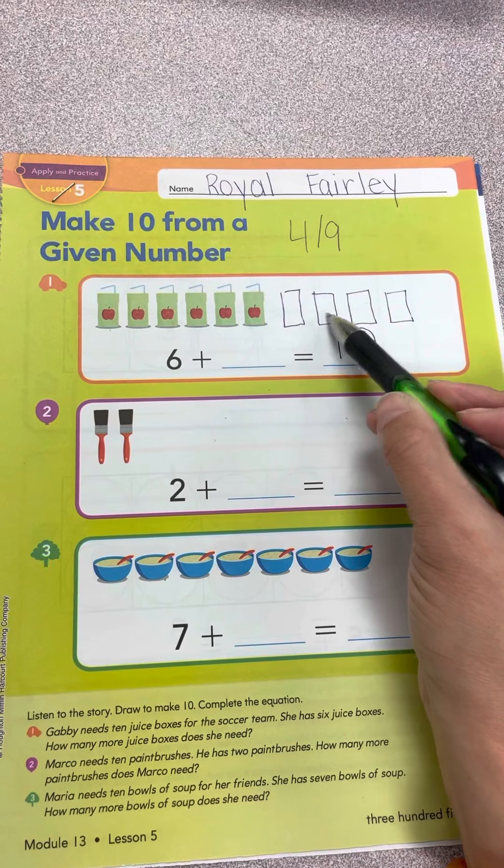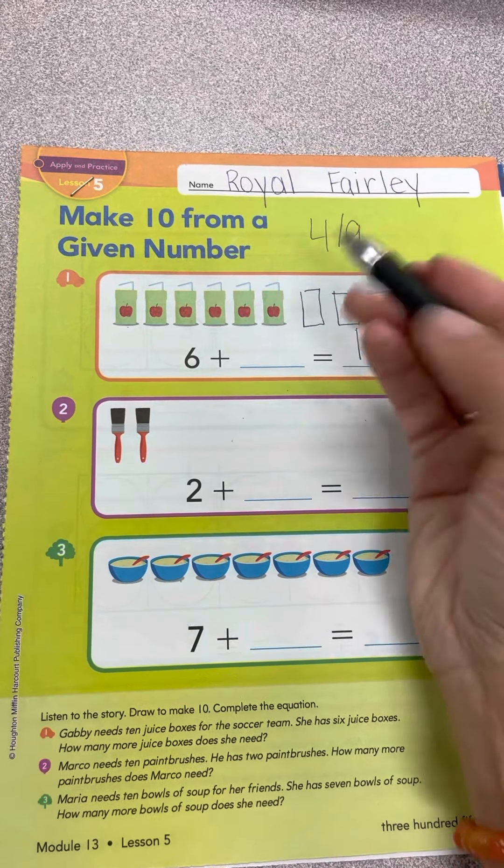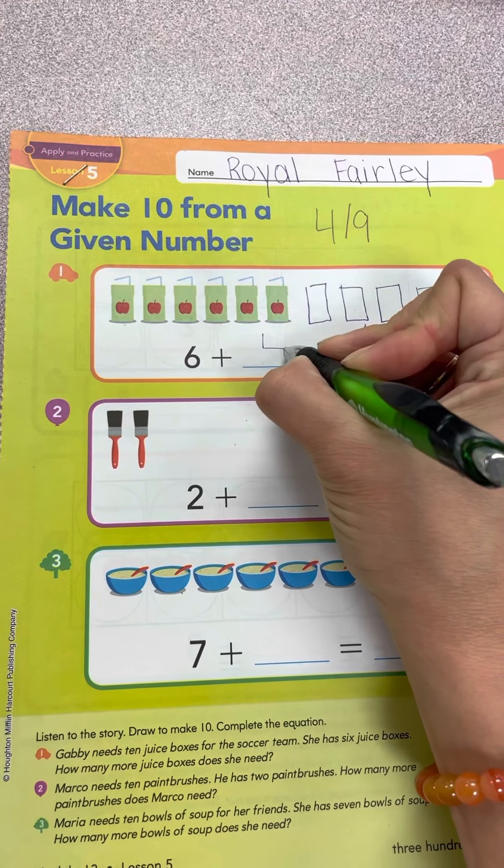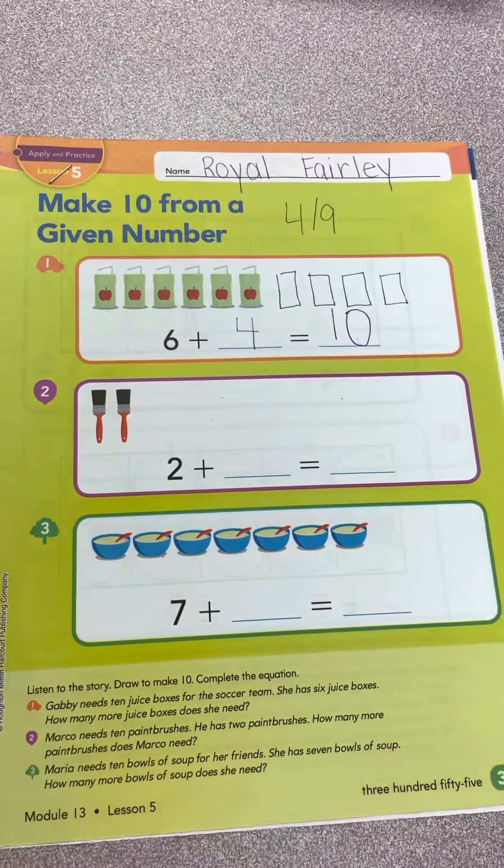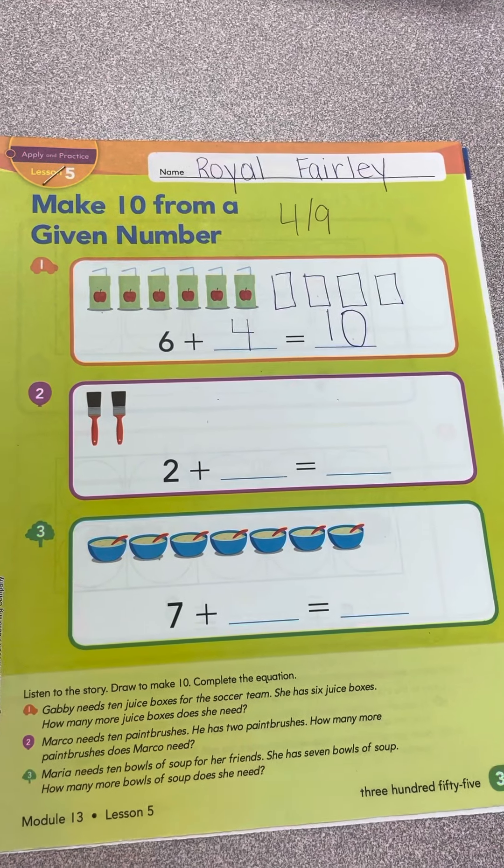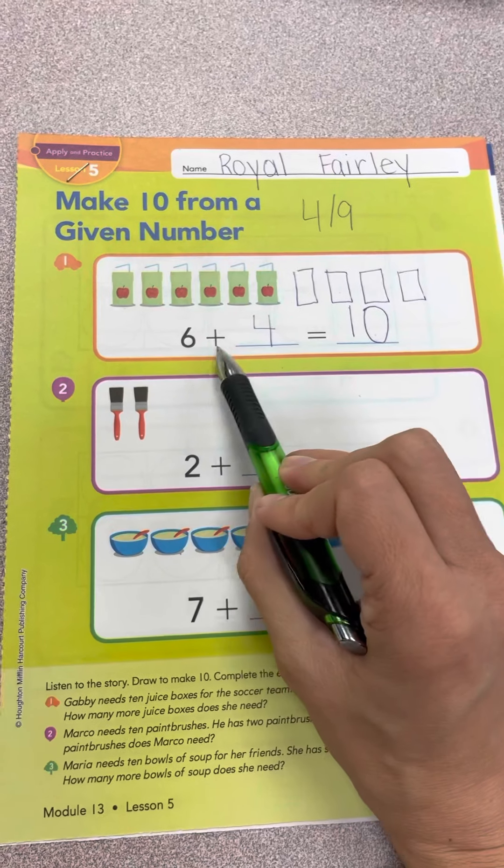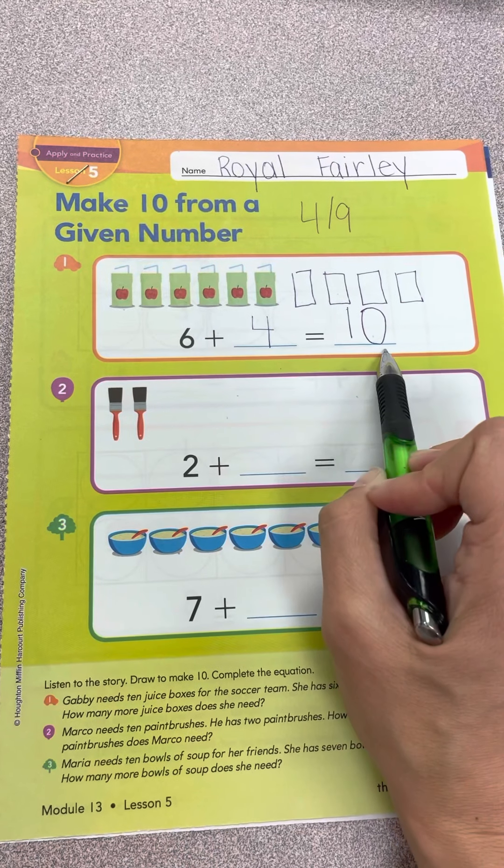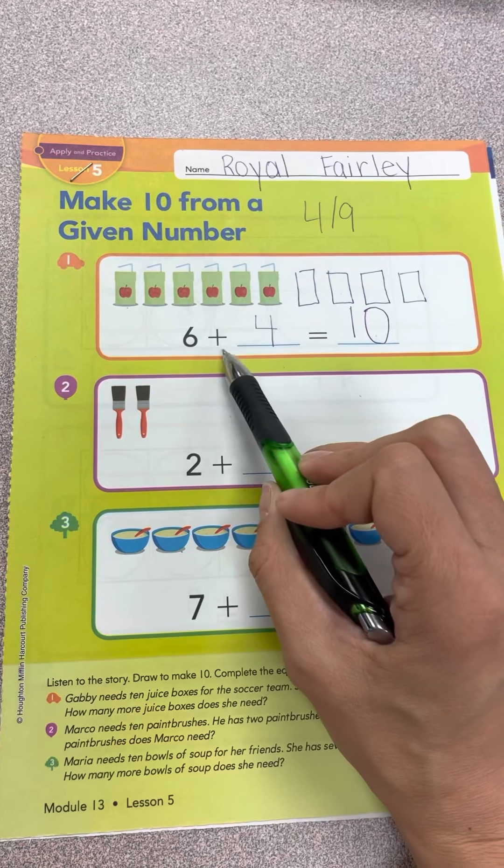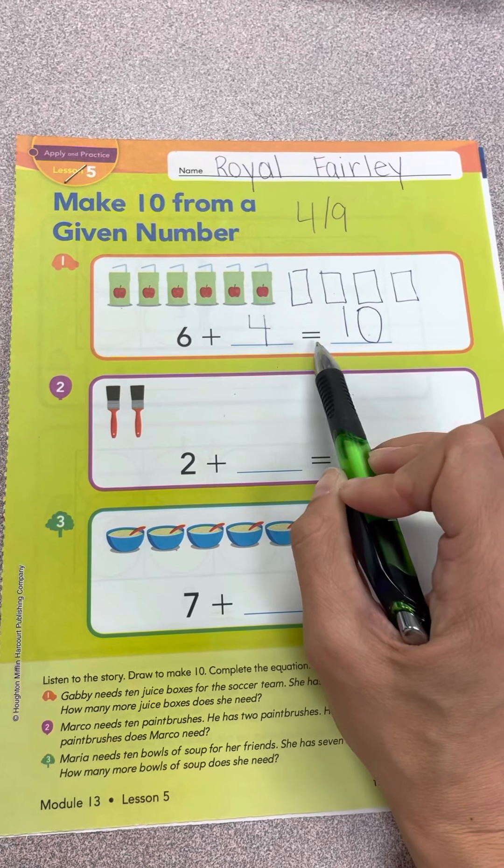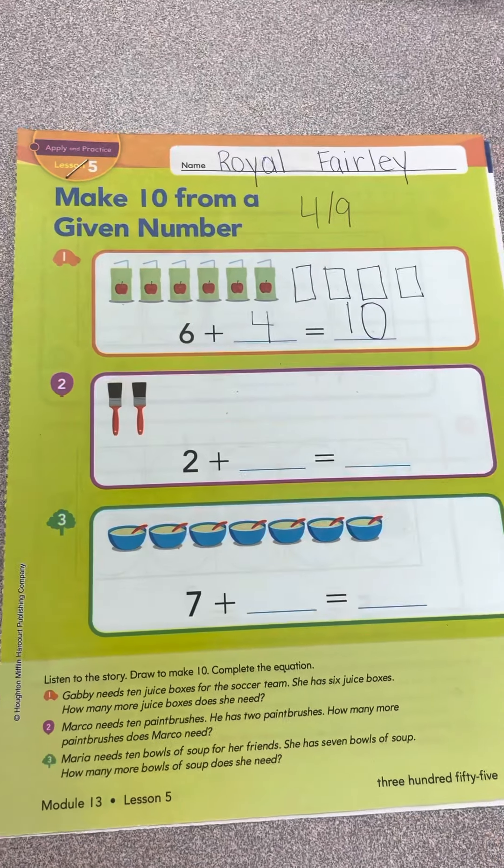1, 2, 3, 4. Down, across, go down once more. That is how you make a 4. So we said 6 plus 4 equals 10. Six juice boxes plus 4 more is how we get to 10.